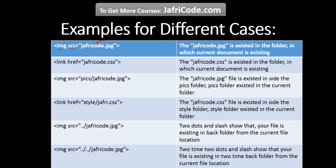For example, this is an image tag with its source attribute. When you provide only the image name without any folder name, this means the image exists in the same folder as the current document. If you want to insert a CSS file and both the CSS file and the document are in the same folder, you can also provide only the CSS filename with its extension.